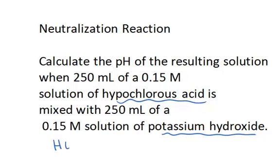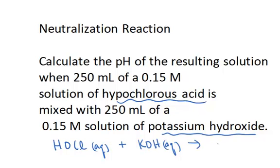So the next thing you do is write down the formula of all of the reactants and products and balance the reaction. Potassium hydroxide aqueous solution reacts completely with hypochlorous acid to give the salt potassium hypochlorite, which is a soluble salt, plus water.